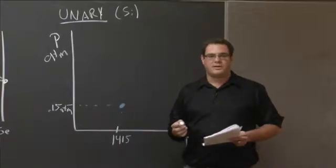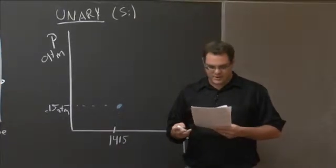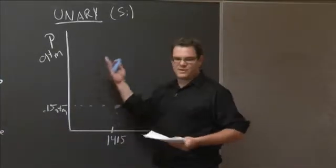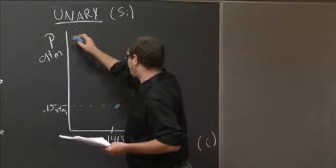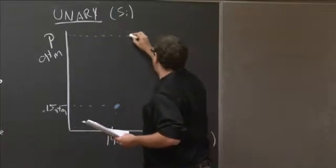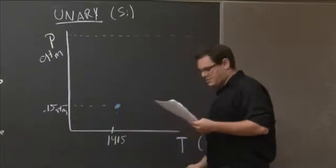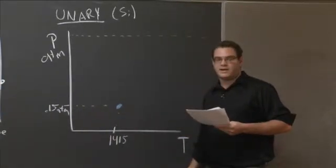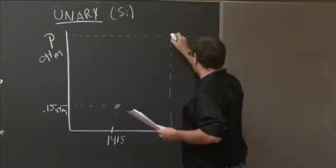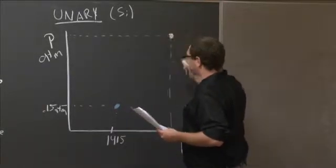I'm next going to plot the critical point here. We're told that that occurs at a pressure of 6,600. So not to scale, of course. But that's going to be somewhere all the way up here. And we're told that that is at a temperature of 4880. So here's a point here.